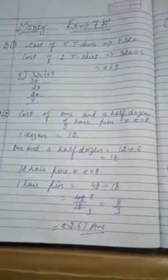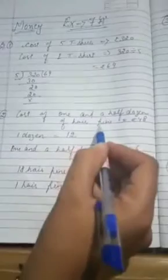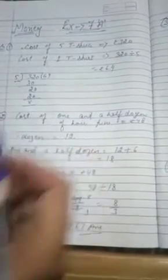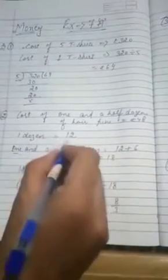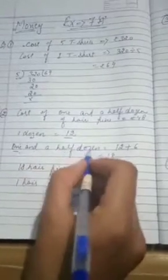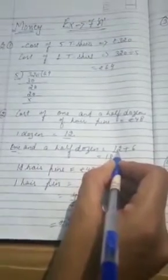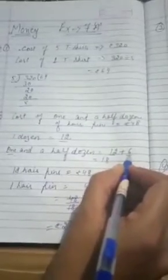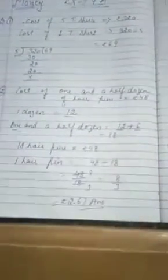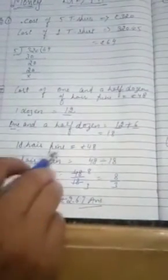Now moving on to our next question. Chetna bought 1 and a half dozen pins. Cost of 1 and a half dozen hair pins is 48. 1 dozen equals to 12. So 1 dozen and half dozen - 1 dozen stands for 12 and half dozen stands for 6. If 1 dozen is 12, then half is 6. So total is 18.